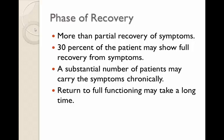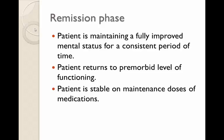What happens in the phase of recovery? This is more than partial recovery of symptoms. 30% of patients may show full recovery from symptoms, however a substantial number of patients may carry the symptoms chronically, and return to full functioning may take a long time. In the remission phase, the patient is maintaining a fully improved mental status for a consistent period of time. They may return to their premorbid level of functioning and be stable on a maintenance dose of medications. This phase is often achieved after many months or even sometimes years.